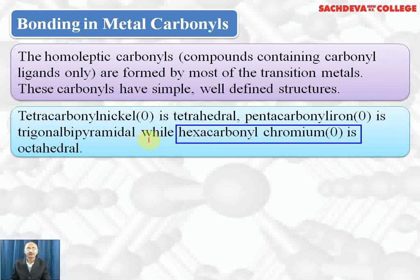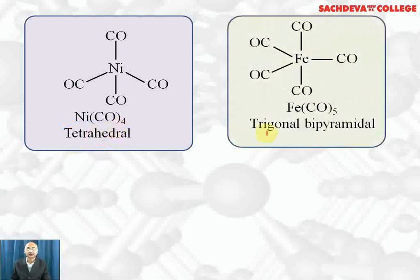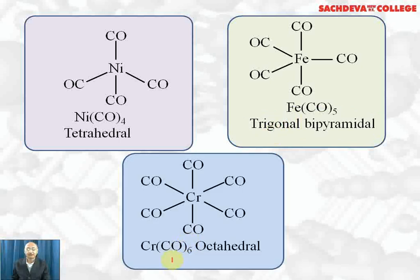Hexacarbonyl chromium(0) is an octahedral complex. For nickel tetracarbonyl, the hybridization is sp³ with a bond angle of 109.5°. Pentacarbonyl iron(0) has dsp³ hybridization giving a trigonal bipyramidal structure with bond angles of 120° and 90°. Hexacarbonyl chromium(0) is d²sp³ hybridized with an octahedral shape and all bond angles equal to 90°.